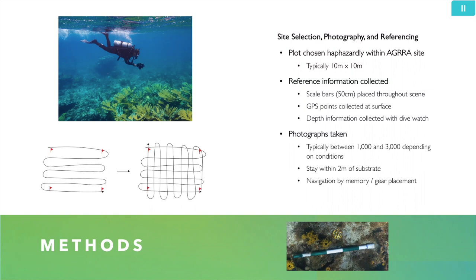On the surface, we collect GPS points at the four corners of the plot and at points throughout the scene. For each scale bar we place on the bottom, we use a dive watch to collect depth information for each point and record that on a clipboard. Then we take the photographs. The way that works is you swim over the reef in a lawnmower pattern. We'll do two passes — going in one direction, then taking photos back over it in the other direction.